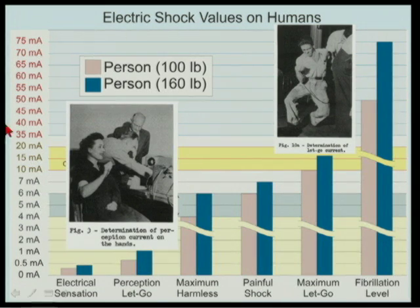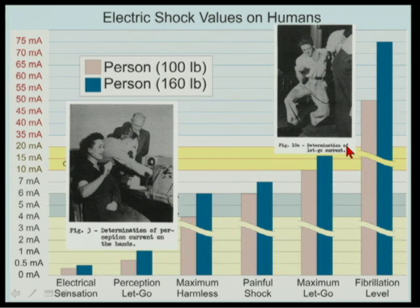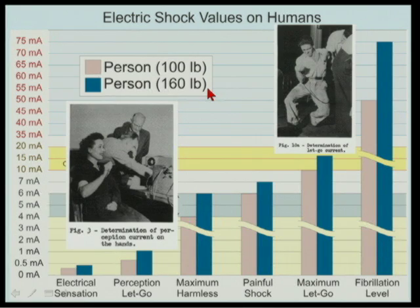Looking at this graphic: electrical sensation and perception current on the hands is less than one-half milliampere. A 160-pound person's maximum let-go threshold would be about 16 milliamperes - it's approximately 1 milliampere per 10 pounds as your let-go threshold. A 200-pound person has a let-go threshold of 20 milliamperes; a 50-pound child has a threshold of 5 milliamperes. GFCIs operate at 5 milliamperes plus or minus 1. GFCI does not guarantee you won't be killed - it means it probably won't kill most people. But for children under 50 pounds, we don't know what will happen.